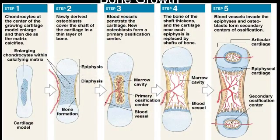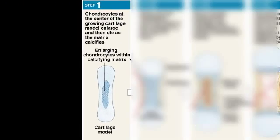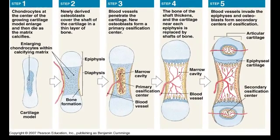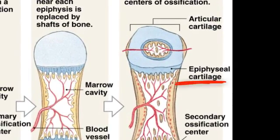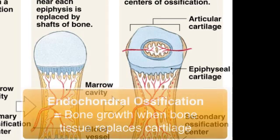All bone begins as hyaline cartilage. During fetal development — the first eight weeks inside the mother — the cartilage is eventually replaced by bone in a step-by-step process. By the time you're born, the long bones have some cartilage remaining. The epiphyseal cartilage forms the growth plates that allow long bones to continue to grow in length, and these growth plates eventually fuse into bone when the average person is about 20 years of age. Articular cartilage stays on the ends of the epiphysis for the entire life of the bone. When cartilage is replaced by bone, it's called endochondral ossification.